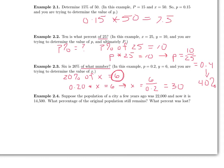Let's look at example 2.4. Here we have an application. Suppose the population of a city a few years ago was 22,000, and now it is reduced to 14,500. What percentage of the original population still remains, and what percentage was lost? In this problem, we're trying to determine some percentages. So, let's let p% represent the percent that is remaining.